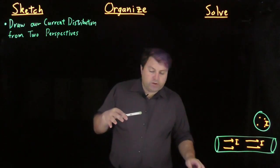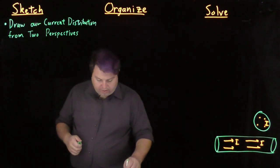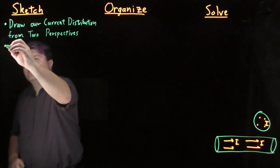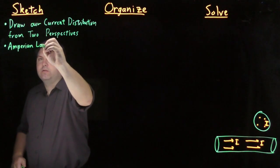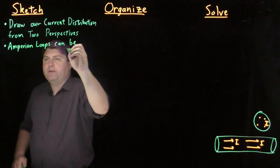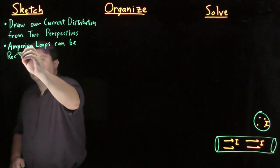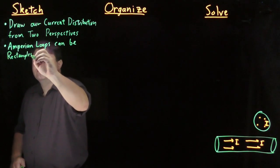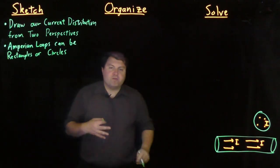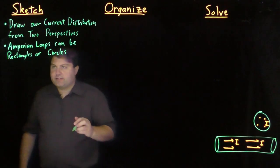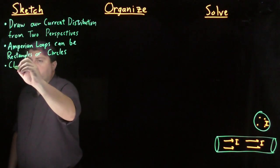So once we have this, our Ampere loops can be rectangles or circles. We don't really need any other shapes for this level of class.